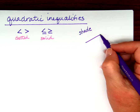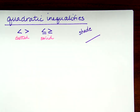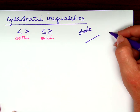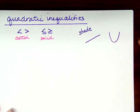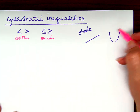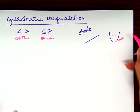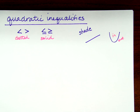Now when we had a line, greater than was above and less than was below. That was easy. But if we have a parabola, do we have an above and a below? We don't. What do we have? Inside and outside. We're going to be either shading inside or outside when we do this kind of quadratic inequality.